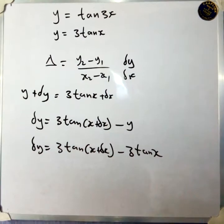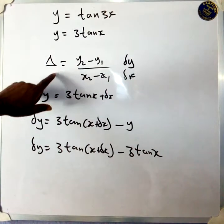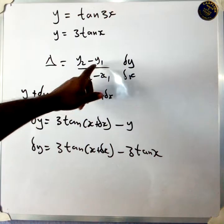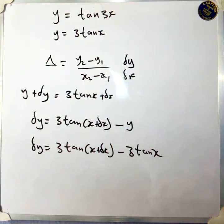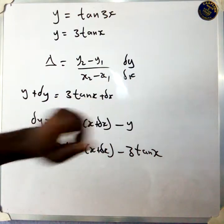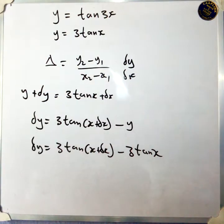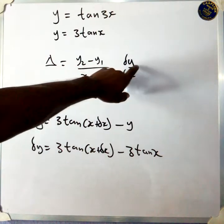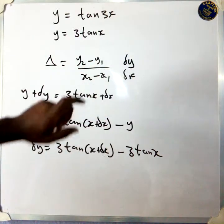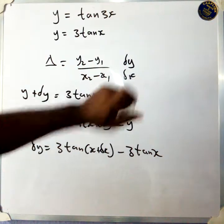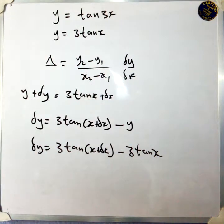You get a slope. This is the slope here: y2 minus y1 over x2 minus x1. So you see that y2 minus y1 is equal to delta y, and x2 minus x1 stands for delta x.